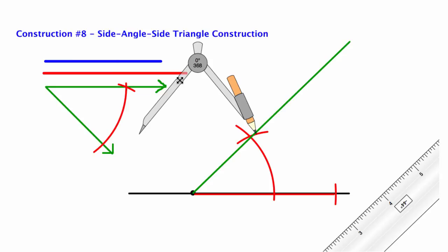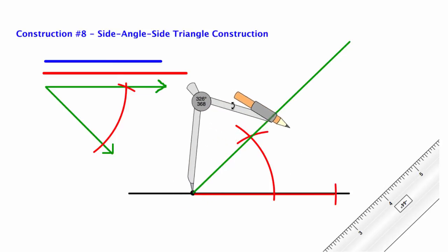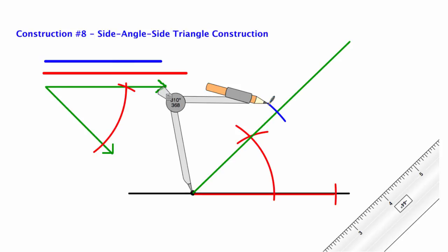And now from the vertex, I'm going to copy the blue segment on the other ray. Copy a segment.